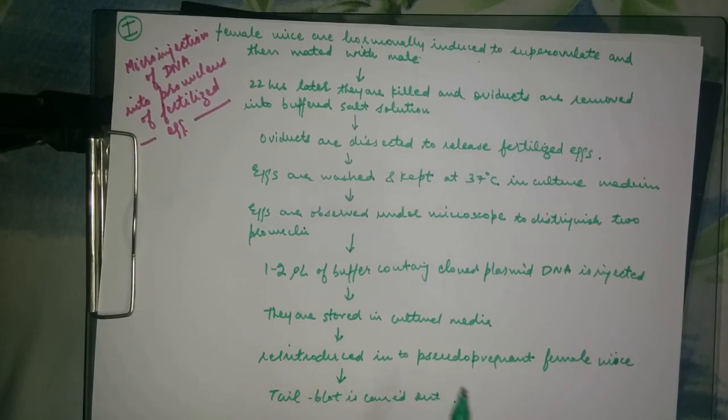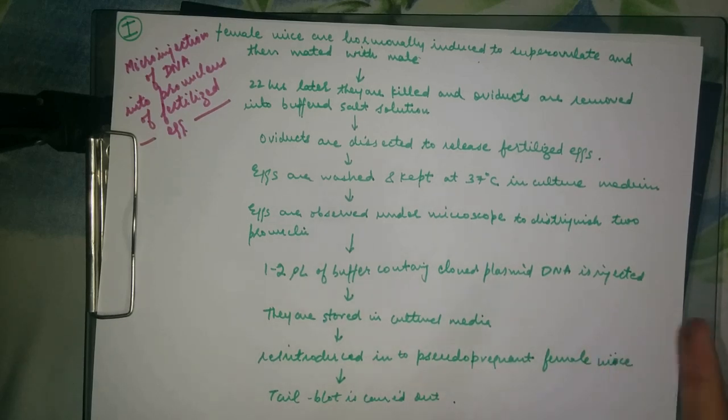Then 10 to 20 fertilized eggs which have been gene manipulated are reintroduced into the pseudopregnant female mice. Now let me explain what pseudopregnant female mice means. The female mice are made pseudopregnant by mating with vasectomized males.